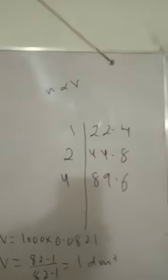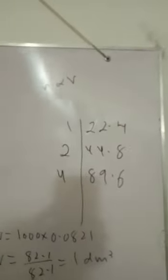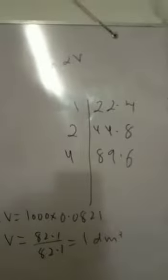If one mole is 22.4 dm³, we double the moles and the volume is double, 44.8. We double the volume, 89.6.